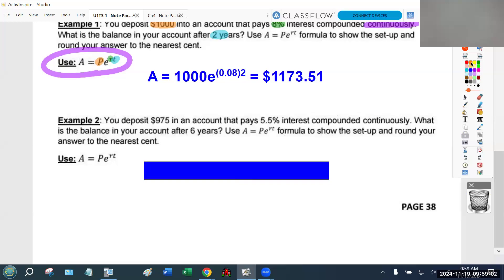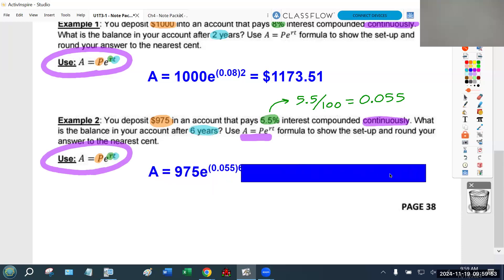Last problem. I apologize for rushing a little bit, but we technically have two minutes left. You deposit $975, that's your initial amount, into an account that pays 5.5% interest, that's your rate, which again you must divide 5.5 by 100 to convert it to the decimal form. I really hope you're able to look at 5.5 and know that's just 0.055. When it says compounding continuously, that tells me I have to use this format. What is the balance in your account after six years? So we plug in six for T. This is what our work looks like. We start with 975 compounds continuously at 5.5% interest for six years, and our final balance is going to be a little over $1,300.